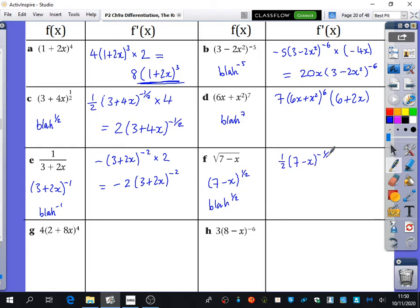decrease the power by 1, and multiply by the derivative of 7 minus x, which is minus 1. So overall, it is minus a half, 7 minus x to the minus a half.